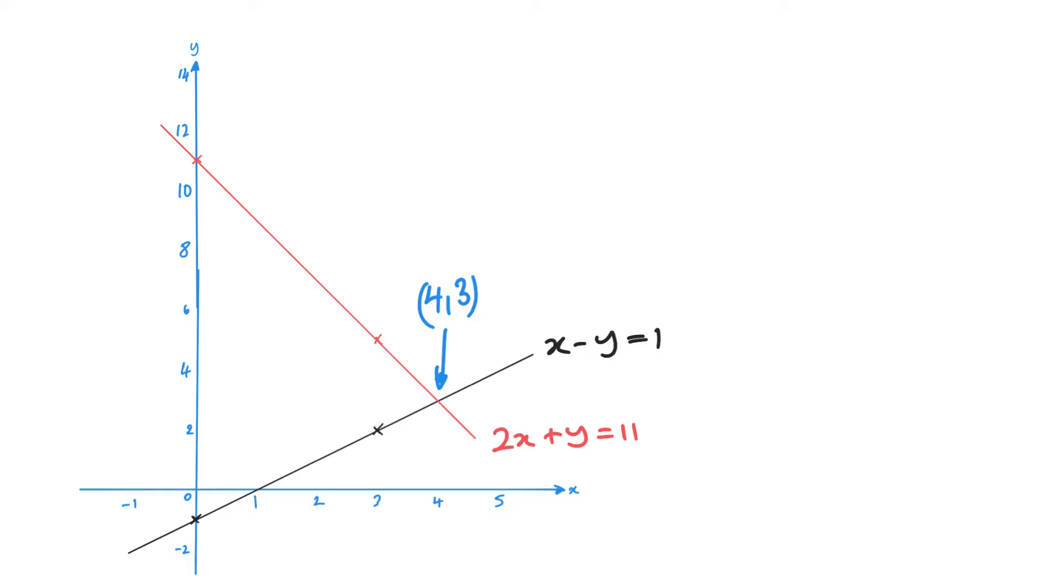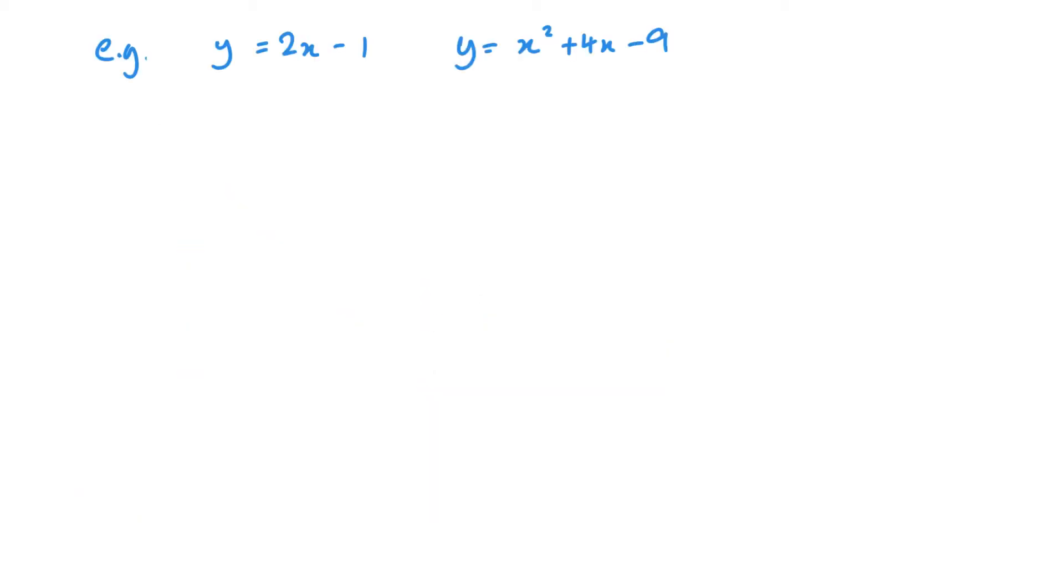The process is the same when I've got a linear and a quadratic graph. The linear one is straightforward to draw. The quadratic one you might want to complete the square. There's more than one way of drawing this. Clearly our minimum or turning point is when x is minus 2 and y is negative 13.